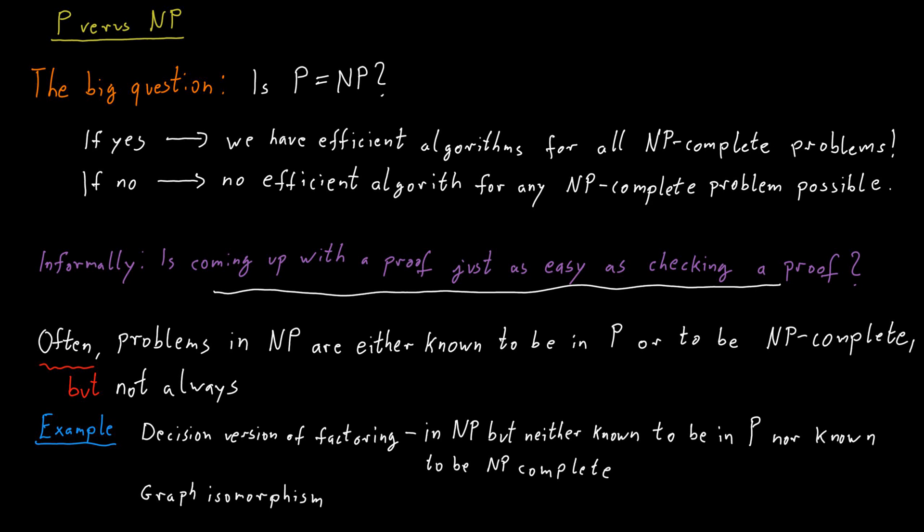And this problem also turns out to be in NP, because if the two graphs are isomorphic, then I can simply tell you what the mapping from the vertices of one graph to the other graph should be, and you can then check this. But the problem is not known to be in P and is also not known to be NP-complete.